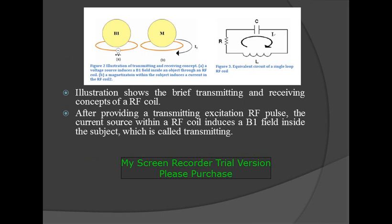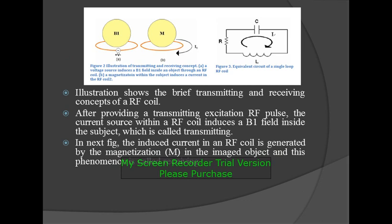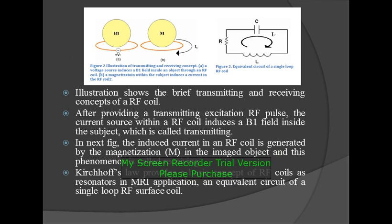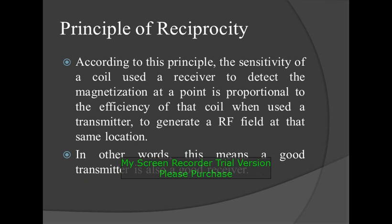This illustration shows the brief transmitting and receiving concept of an RF coil. After providing a transmitting excitation RF pulse, the current source within an RF coil induces a B1 field inside the subject — this is called transmitting. In the next figure, the induced current in an RF coil is generated by the magnetization in the image subject, and this phenomenon is called receiving. Kirchhoff's law provides a basic concept of RF coils as resonators in MRI application, showing an equivalent circuit of a single-loop RF surface coil.